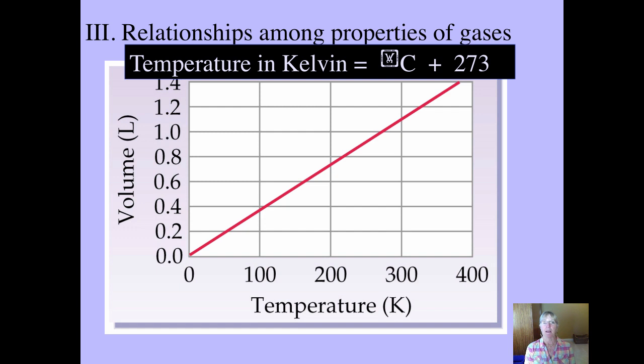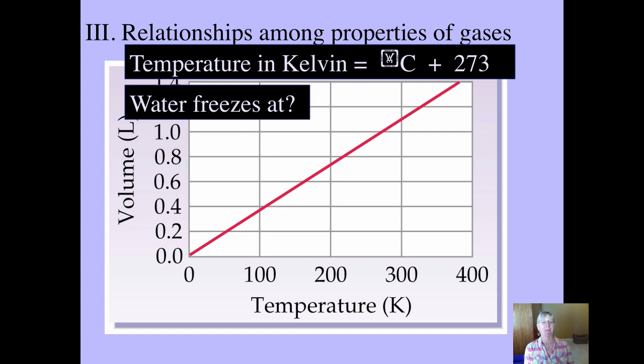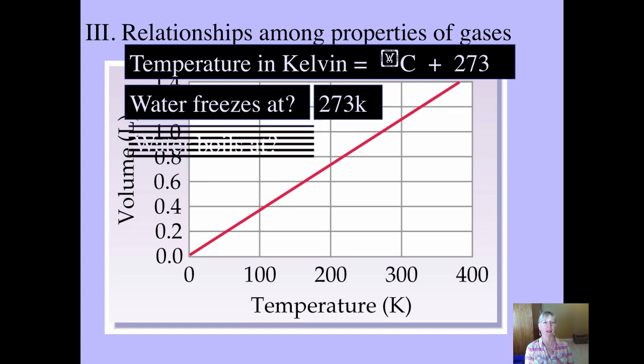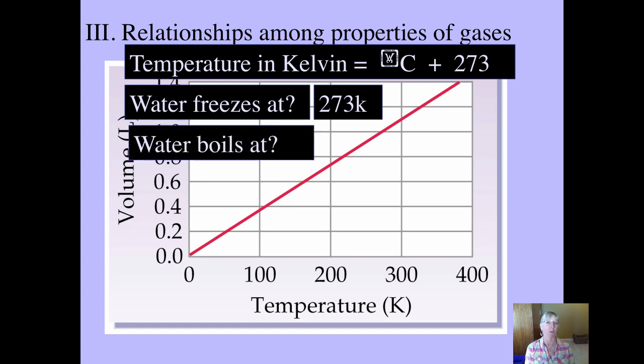As we said, the temperature in Celsius is added to 273. Water obviously will freeze at zero Celsius or 273 Kelvin. That's a capital K. And water would boil at 100 plus 273 or 373 Kelvin. That's a rerun. Went through it kind of quickly.